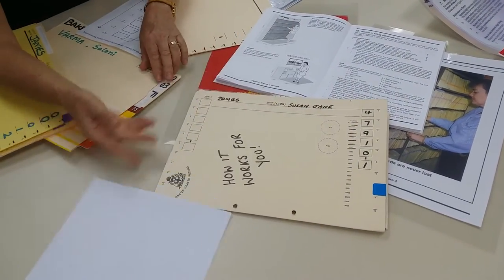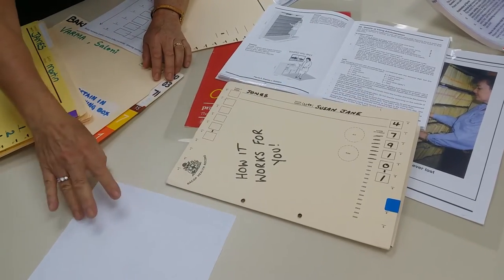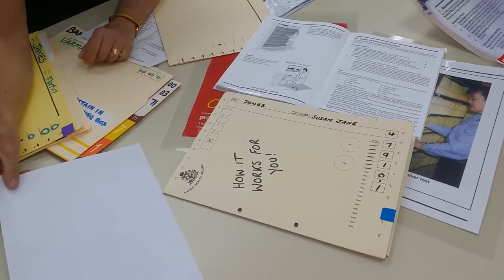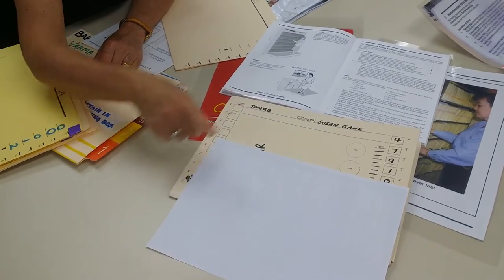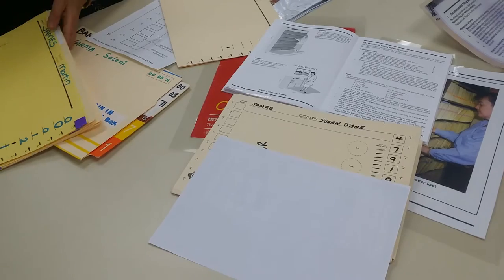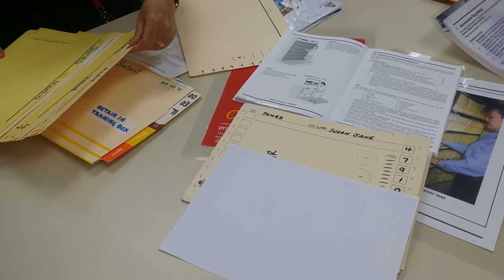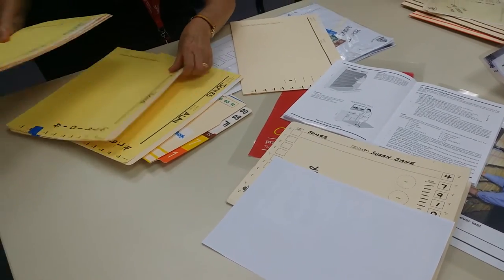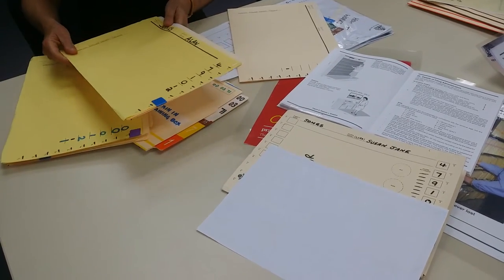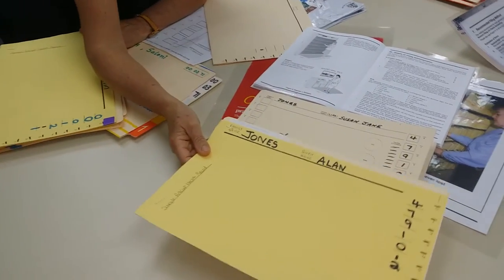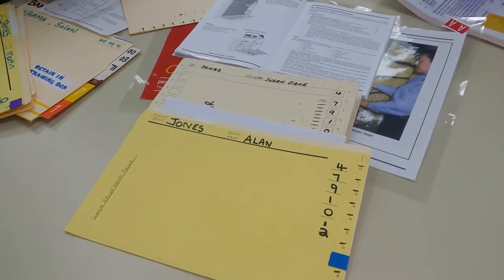Now, Susan Jones may have many members in her family and the whole purpose of this filing system is to group family members together. So if Susan Jones decides to have a baby and presents the baby to the practice,